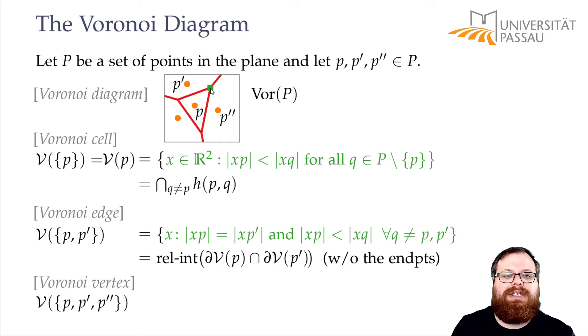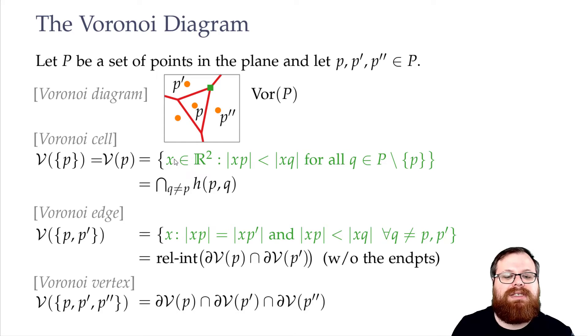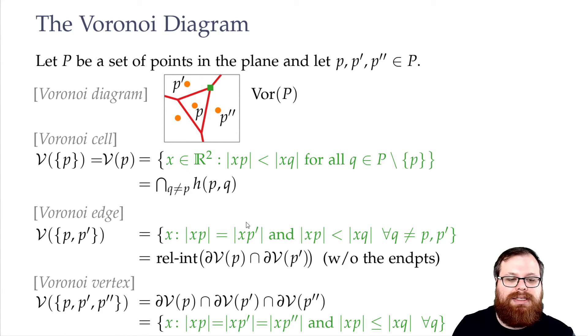So this point actually has three closest points in our point set. P, P', and P'' have the same distance from it. So we can define it the same way as the edges, but with three points instead of two. There is no other point that is closer.